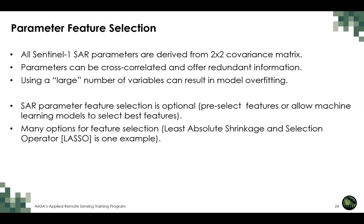Feature selection is an optional step. We can derive many polarimetric parameters from the Sentinel-1 SLC data's two-by-two covariance matrix, but these parameters can be cross-correlated and offer redundant information, which can lead to model overfitting. Feature selection algorithms — for example, the LASSO algorithm — can be applied to pre-select features and remove redundancy, or machine learning models can be allowed to select the best features themselves. In this webinar we are not going through feature selection, but it is an available option.